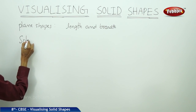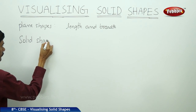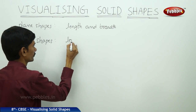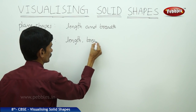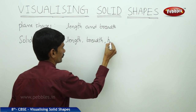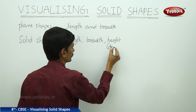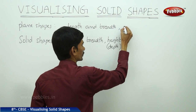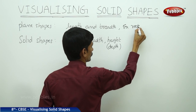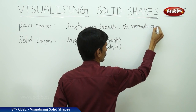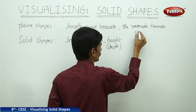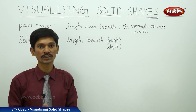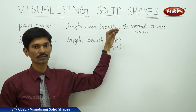The solid shapes are solid objects. These solid objects have three measurements: length, width, and height or depth. We can give some examples. A rectangle, triangle, or circle are examples of plane figures because they have only two measurements — length and width — but no thickness or height.